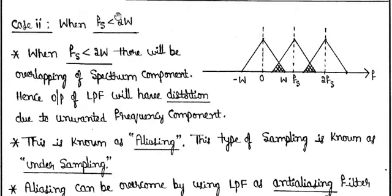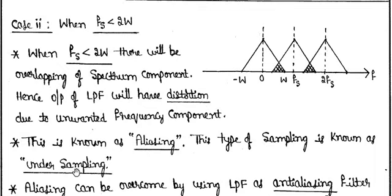The second criteria is when the sampling rate is less than 2W. For example, if you have a message signal of 15 hertz but set your sampling frequency to only 20 hertz, it leads to overlapping of the spectra, causing loss of information. This overlapping effect is called aliasing, also known as the under-sampling condition, and it is not preferred when sampling.